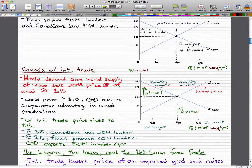The world price exceeds $10, Canada has a comparative advantage, and the price rises to $15. That is what we got so far.